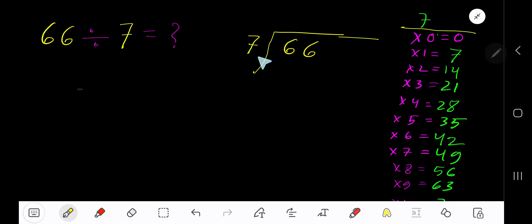66 divided by 7. Here, 7 is the divisor, so we need the multiplication table of 7. 7 times 0 is 0, 7 times 1 is 7, 7 times 2 is 14, 7 times 3 is 21, 7 times 4 is 28.